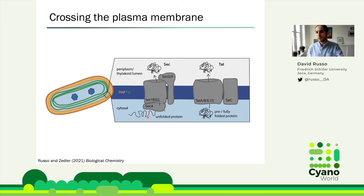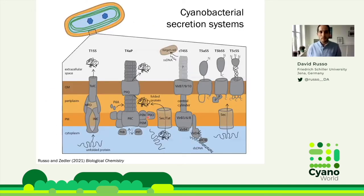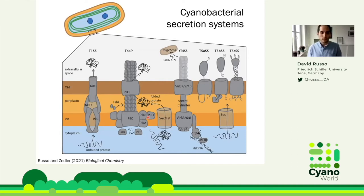Once in the periplasm — which is dependent on signal peptides, typically a short N-terminal sequence targeting the protein to a specific translocation mechanism — the protein has no signal peptide and must engage with other machinery to be secreted. This is essentially an overview of secretion systems that can typically be found in cyanobacteria. They're not all present in all cyanobacteria, and we'll talk about that, but this is the variety we know of confidently at the moment.